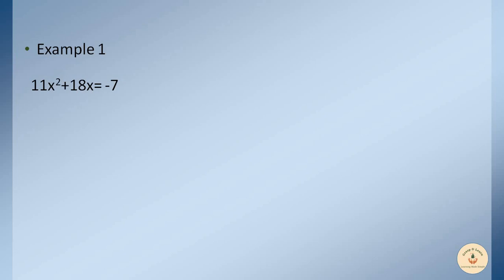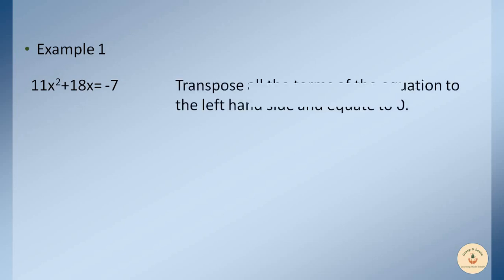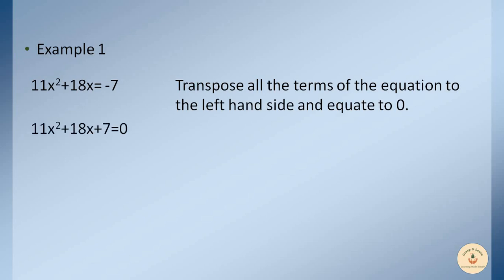To solve it, we follow certain steps. The first rule is to transpose all terms to the left-hand side and equate to 0 — there should be no term on the right-hand side. Here we have −7 on the right-hand side; we move it to the left, and the sign changes. The equation becomes 11x² + 18x + 7 = 0.